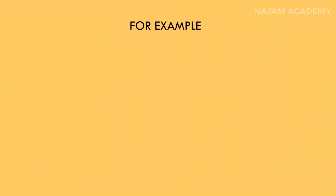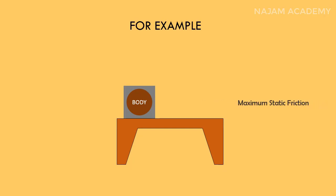For example, if a body is on the table, I say that the maximum static friction force between the body and the table is 50N. Then this means that even 49N force will not create acceleration in this body.